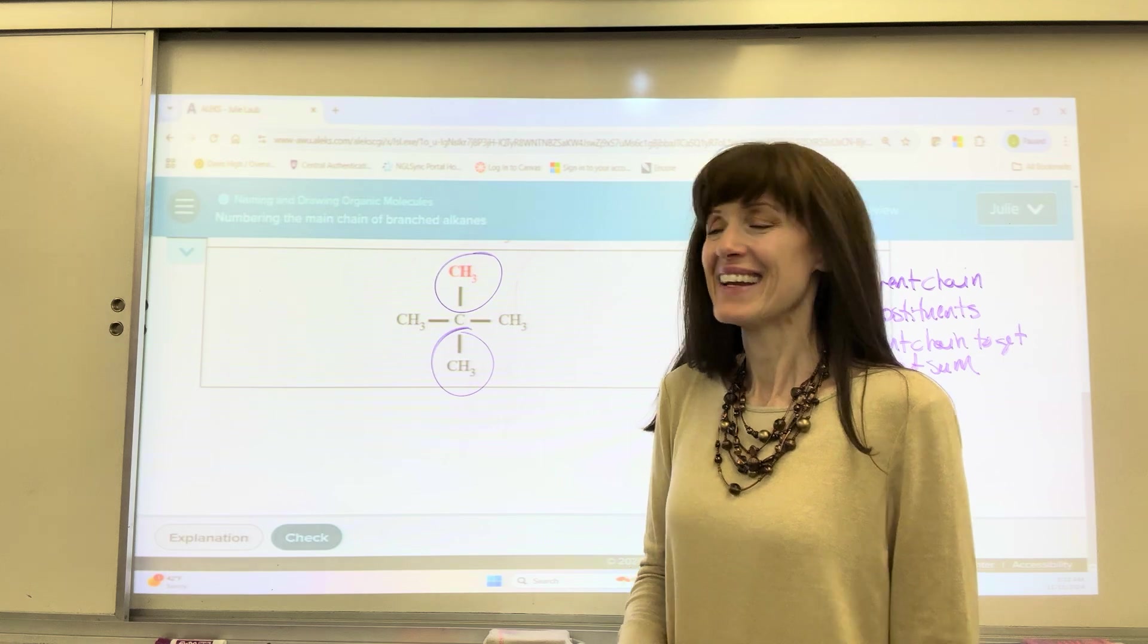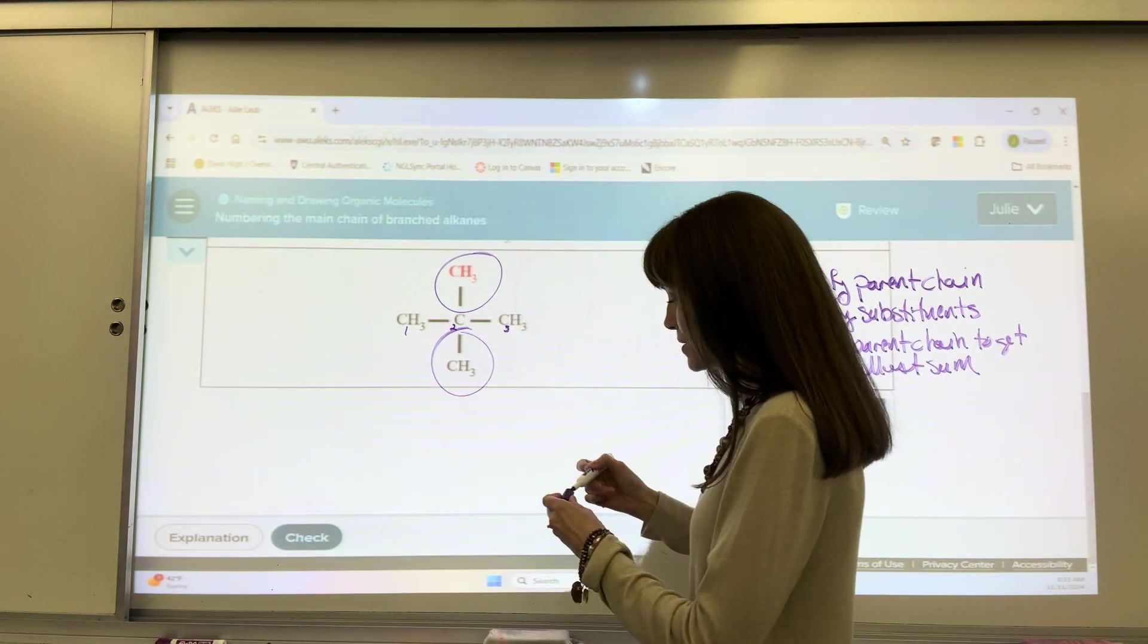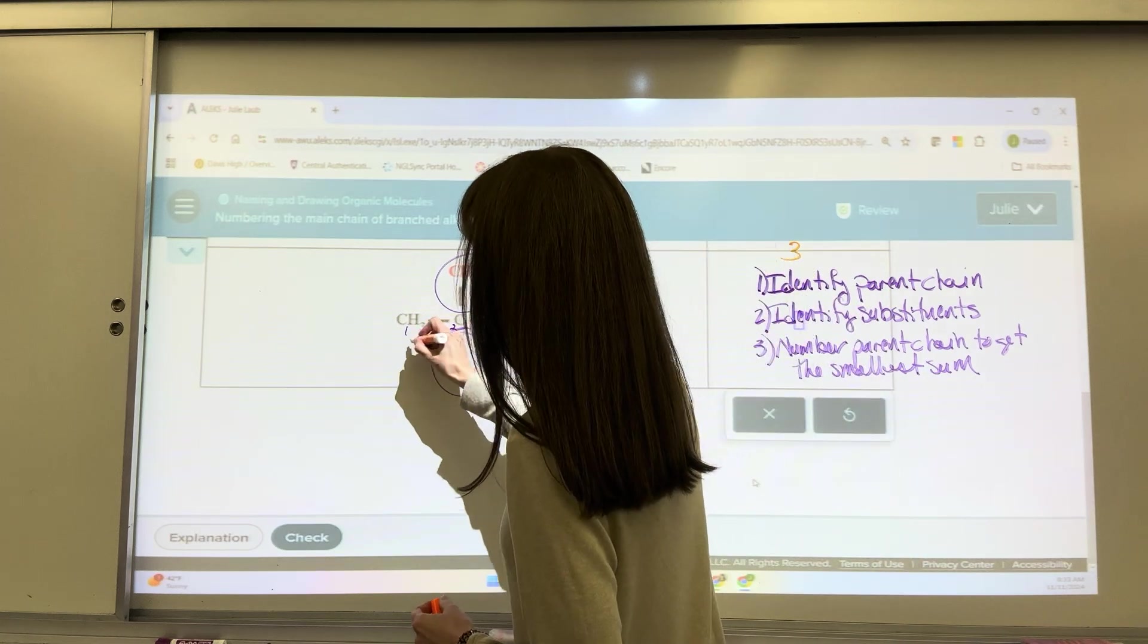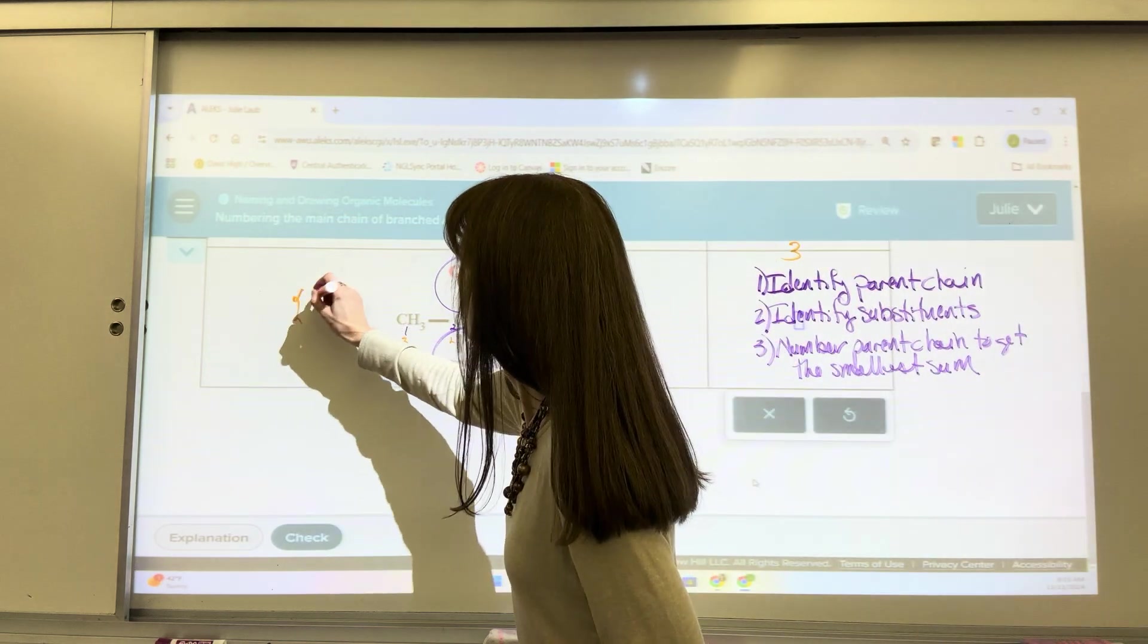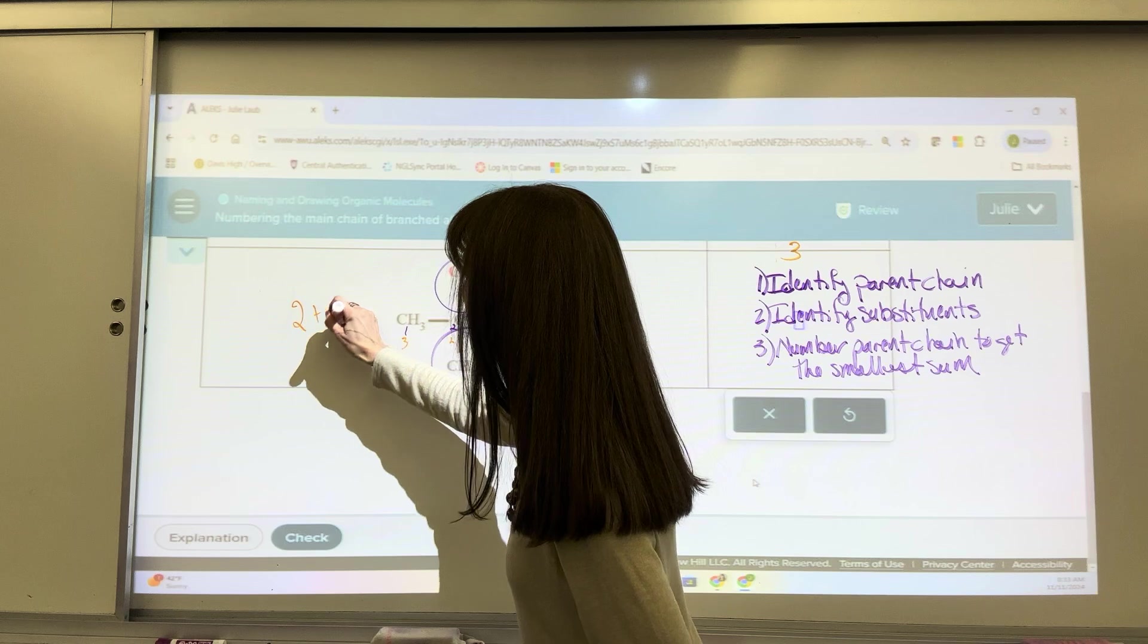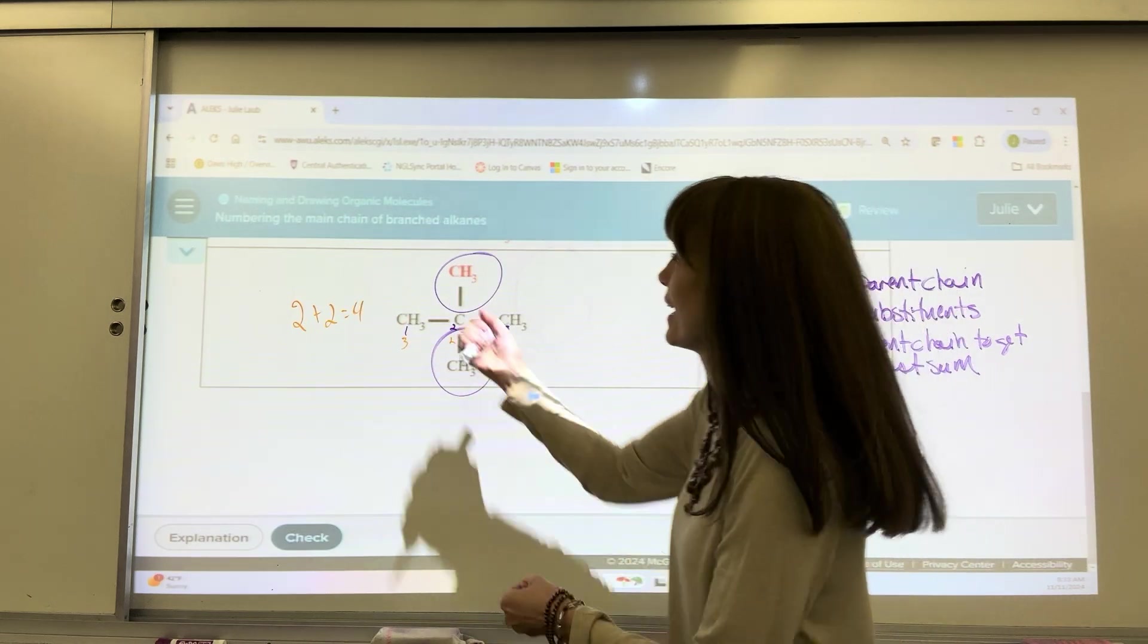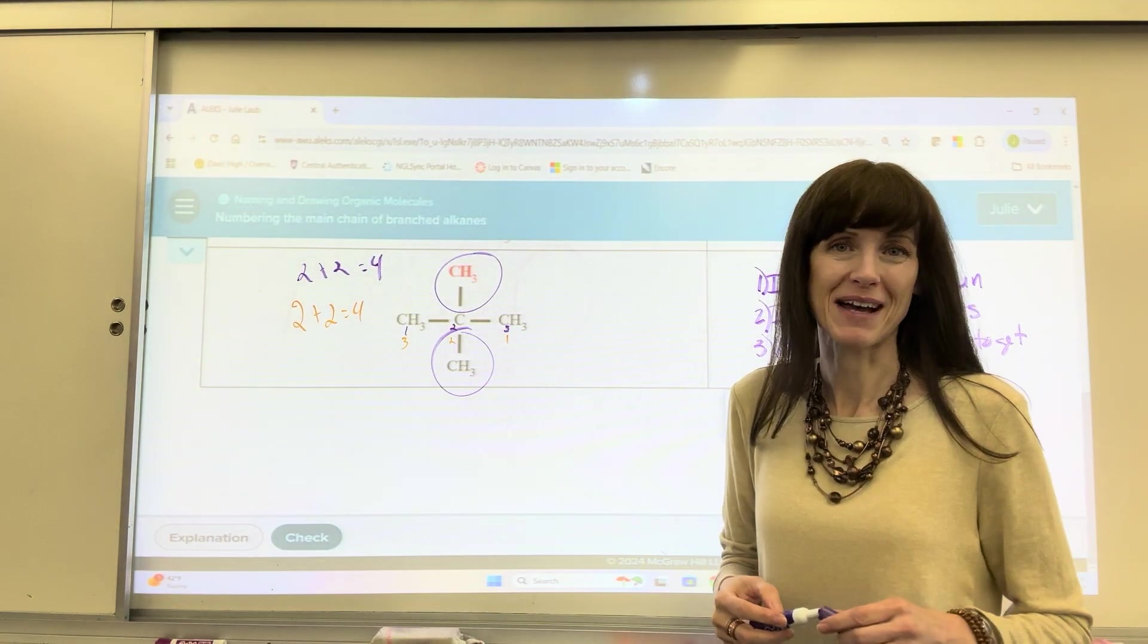Well, interesting on this one, it doesn't matter if you number left to right, 1, 2, 3, or right to left, you get the same sum. I'm ready to get a 2, excuse me, a 2 plus 2. 2 plus 2 equals 4 if I go left to right. And I get a 2 plus 2 equals 4 if we go left to right. It doesn't matter.